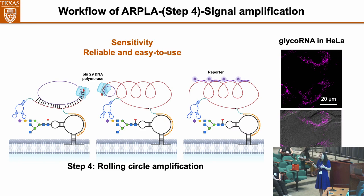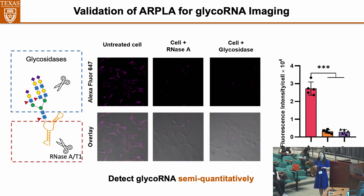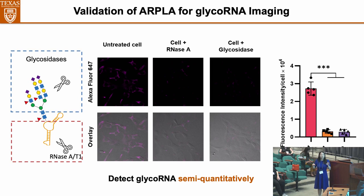After establishing the method, we performed many experiments to demonstrate its reliability. Since this method detects glycoRNA, removing either the RNA or the glycan should eliminate the signal. We used RNase to remove the RNA part, and compared to the untreated group, all signals disappeared after RNase treatment. The same result occurred with glycosidase — after removing the glycan part, no signal remained. This demonstrates our camera can specifically see glycoRNA, and this detection is semi-quantitative.